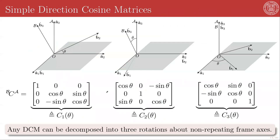We can define the simplest set of direction cosine matrices associated with rotations about a single unit vector of our reference frame. Geometrically, if all of these map from frame A to frame B, whatever unit vector you're rotating around stays the same in both frames. A rotation about A1 produces a frame B whose B1 direction is the same as A1, and rotating by angle theta, A2 rotates into B2 and A3 rotates into B3. The same logic applies for rotations about A2. These are all counterclockwise rotations — by our convention, counterclockwise is positive and clockwise is negative. That is always our right-handed convention.